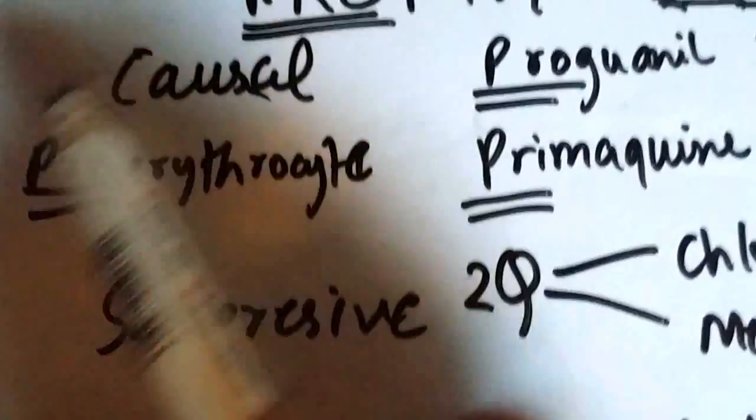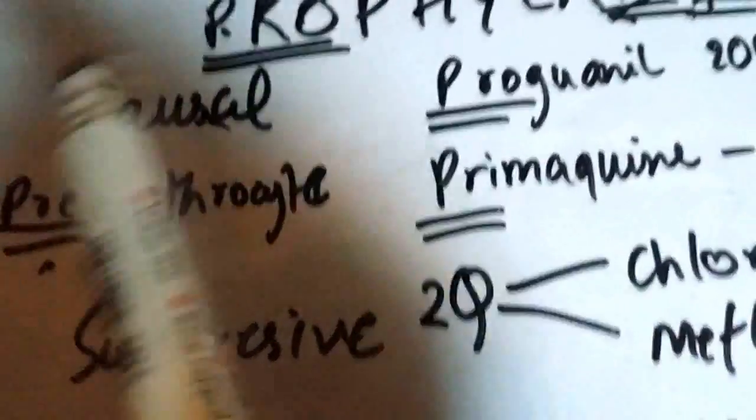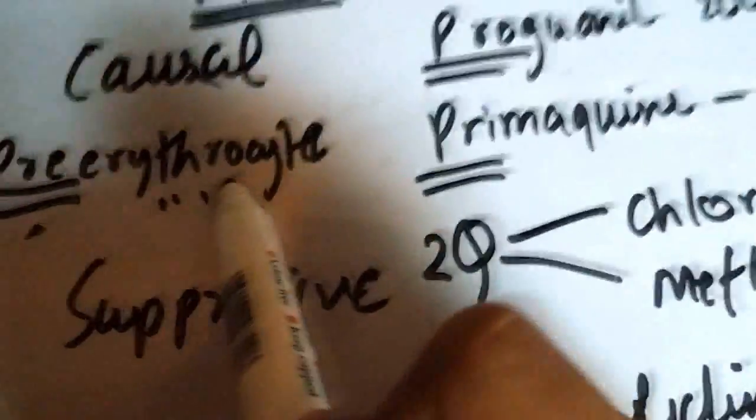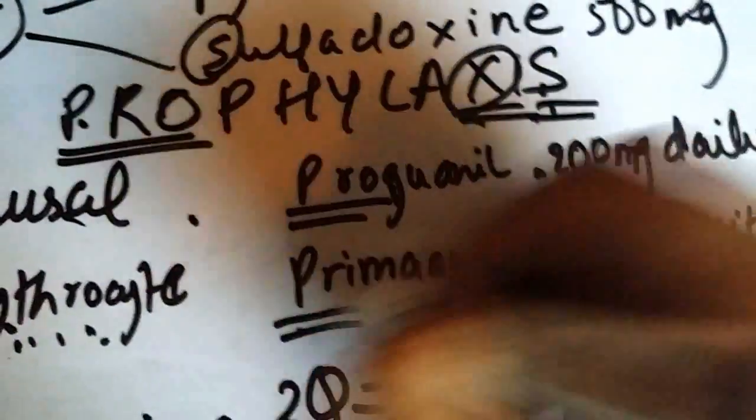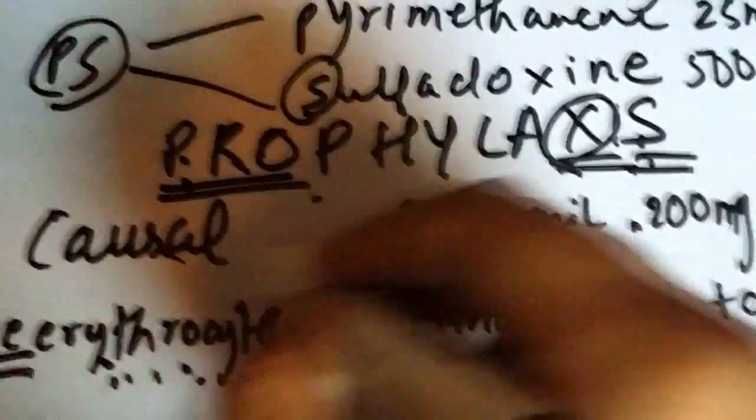Casual prophylaxis targets the pre-erythrocytic phase and suppressive targets the erythrocytic phase of the malarial parasite. Casual prophylaxis has pre-erythrocytic, proguanil, primaquine and prophylaxis, so there's a lot of P's.